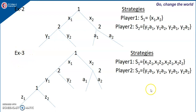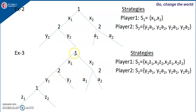Similarly, for example 3, the strategies of player 1 will cover: after the empty history and after the history x1,y1, giving strategies x1z1, x1z2, x2z1, x2z2. For player 2, the first entry refers to the action after history x1 and the second entry to the action after history x2. Since player 2 has two actions at each point, there are again 2×2 = 4 strategies: (y1,a1), (y1,a2), (y2,a1), (y2,a2).